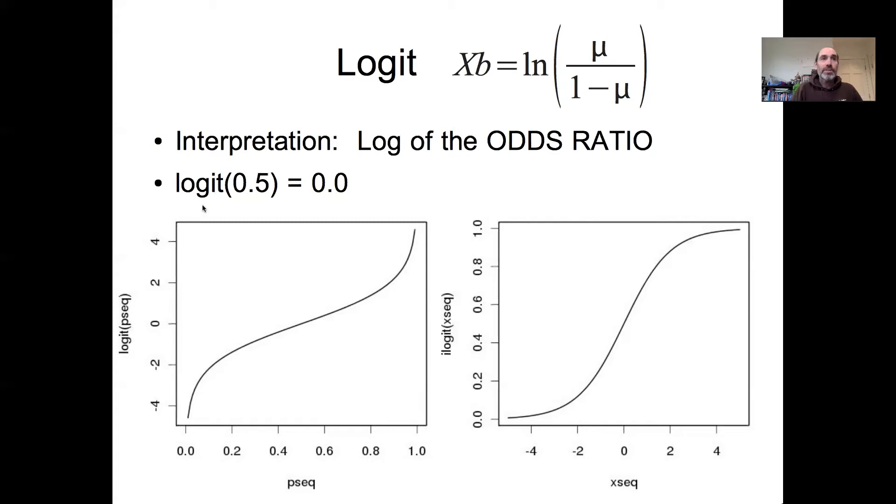Some important reference points for the logit: If your probability is 50%, your odds are one to one, and the log of that is zero. So if we look here on the x-axis, 50% probability translates into a logit of zero. Or if you look at the inverse, which is how the function actually gets used in practice, if zero goes in on the x-axis, that predicts a 50% probability.